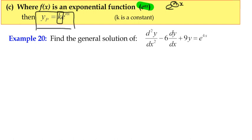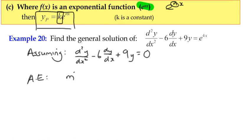We start off assuming we're dealing with a homogeneous equation. So we're assuming d²y/dx² - 6dy/dx + 9y = 0. In other words, our auxiliary equation is m² - 6m + 9 = 0.